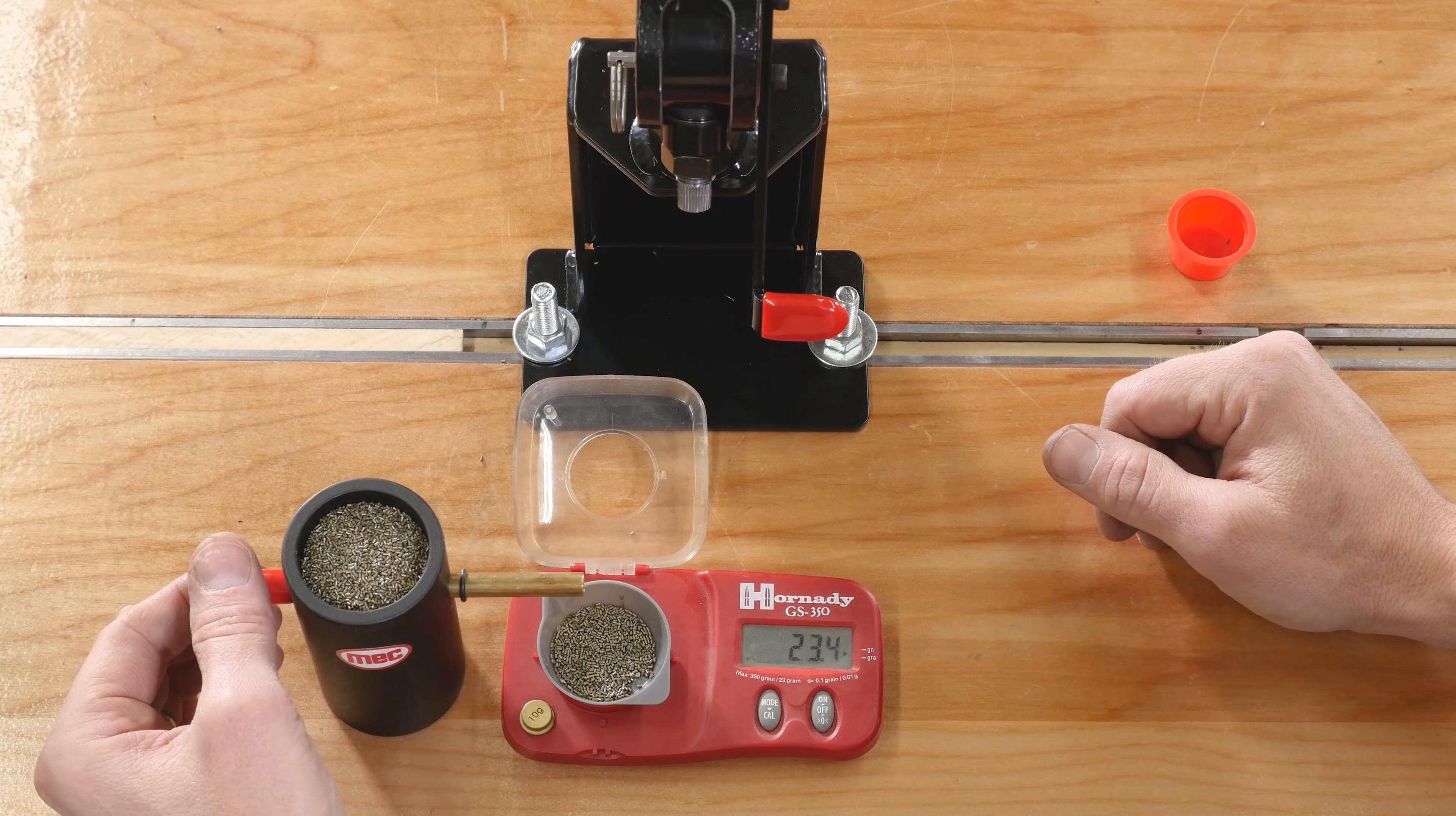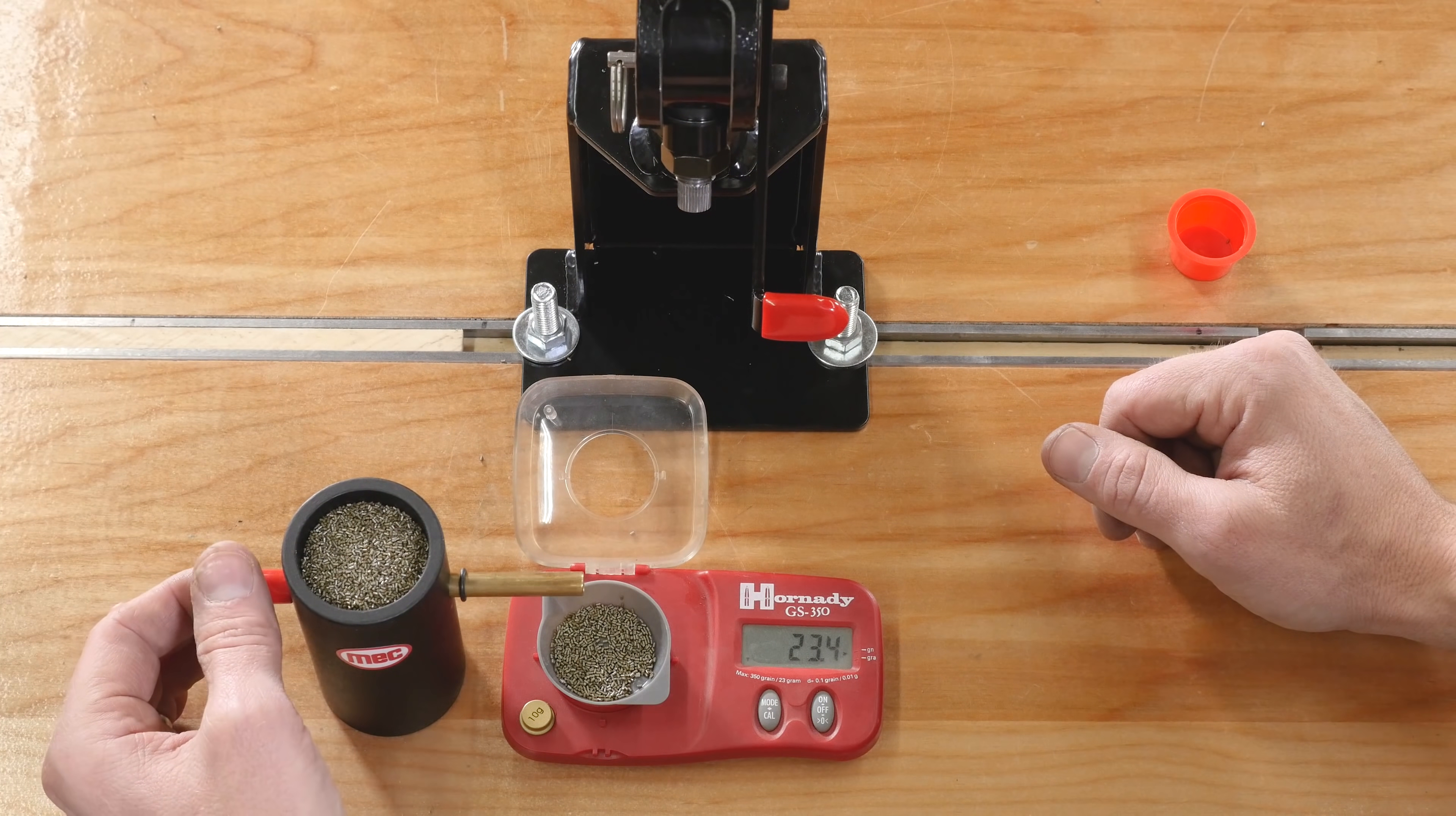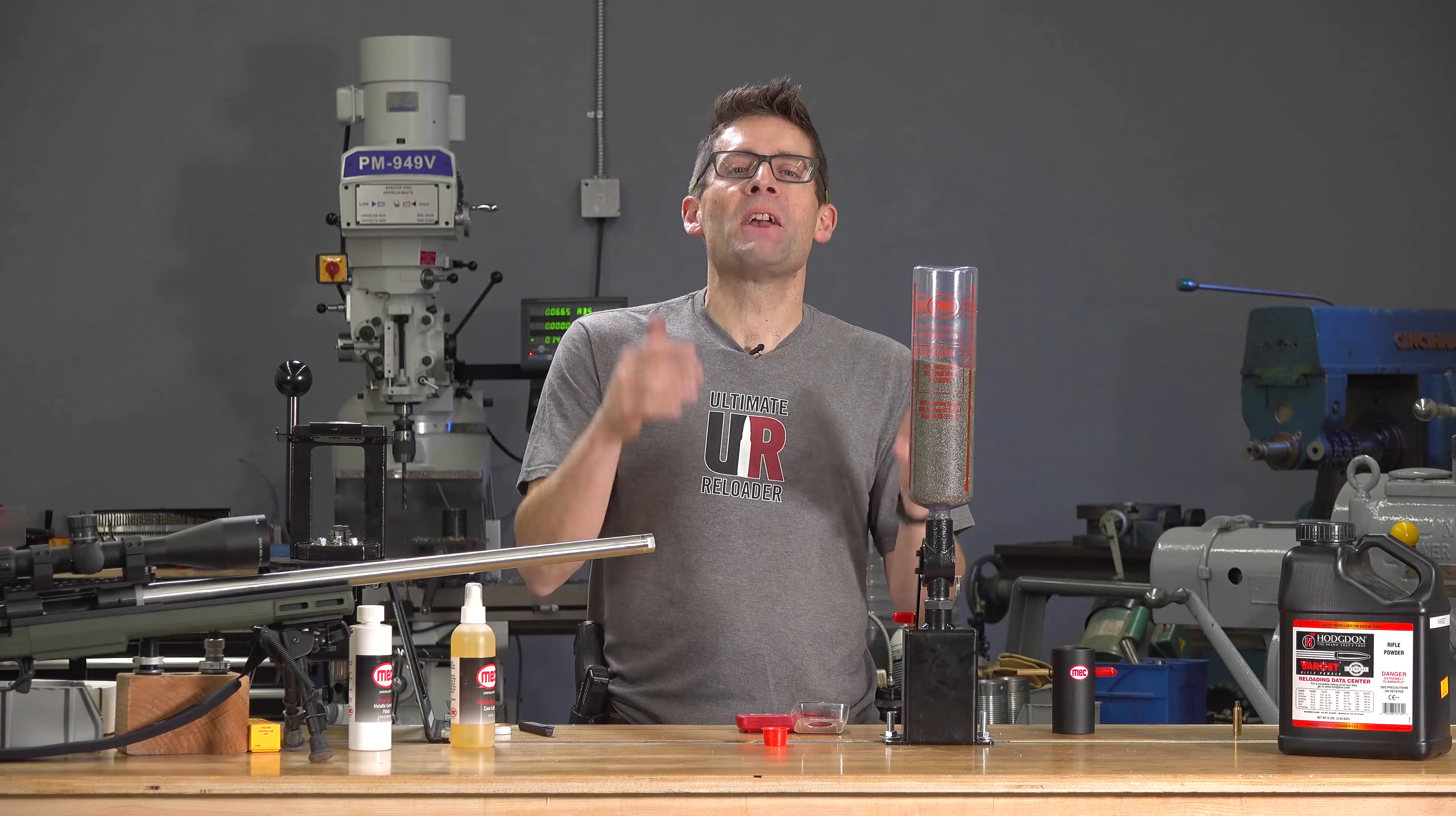Again, we'll do this in the next video with the 224 Valkyrie loading. A little bit more. We'll get into a rhythm when we're doing this. 23.6. There we go. So, now we use our powder funnel. We dump with the pan into the case and there we go.